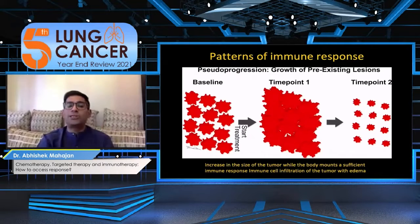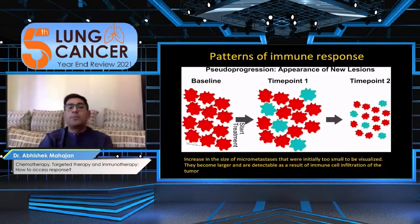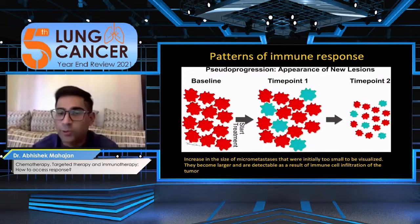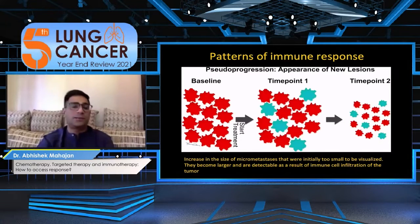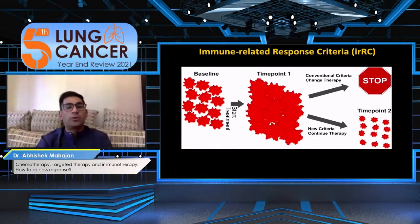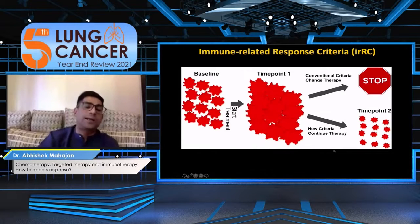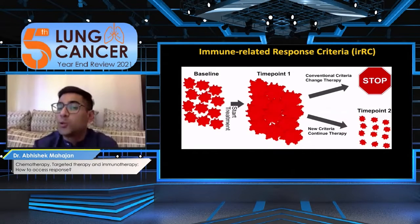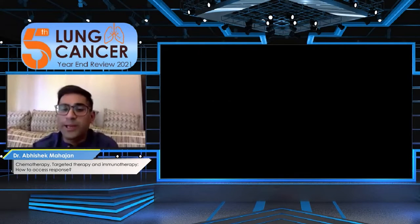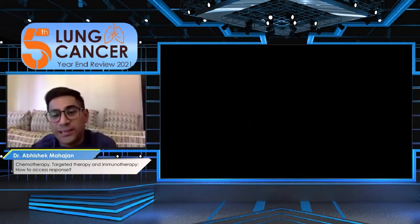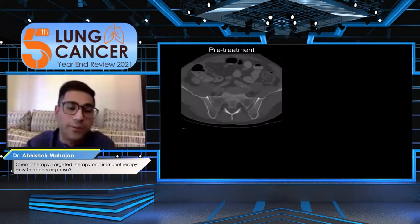Pseudoprogression is mediated either by immune cell infiltration or edema of the cells. Both of these lead to increase in overall tumoral size labelled as pseudoprogression. At the time of pseudoprogression, as per RECIST you would stop the therapy, but as per the newer iRECIST guidelines you would still continue therapy and do a repeat scan at the second interval to check whether this is true progression or not.